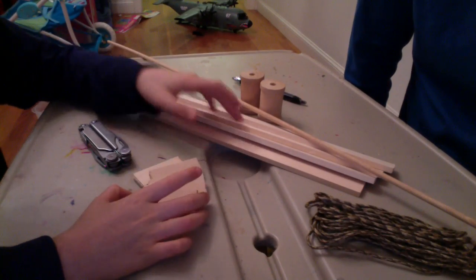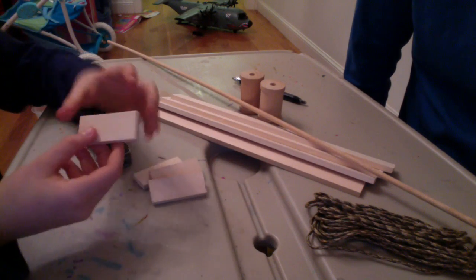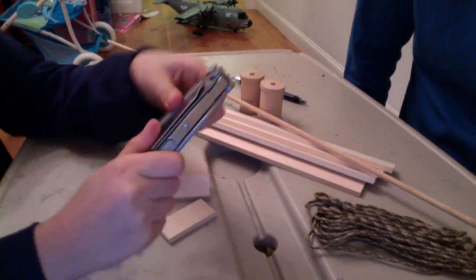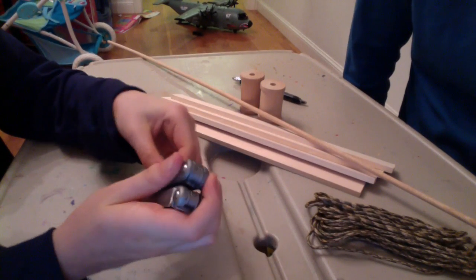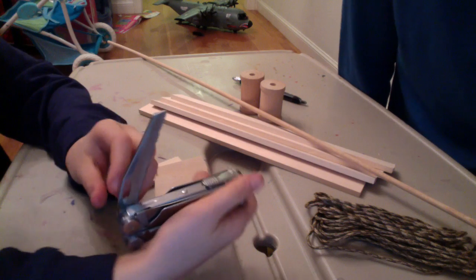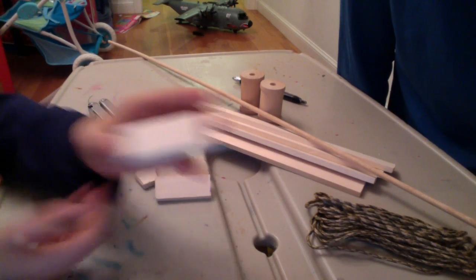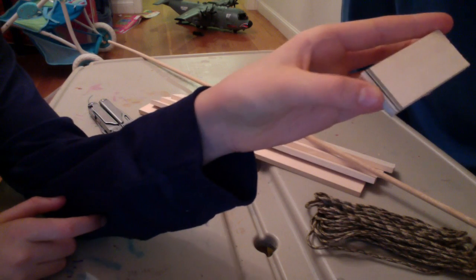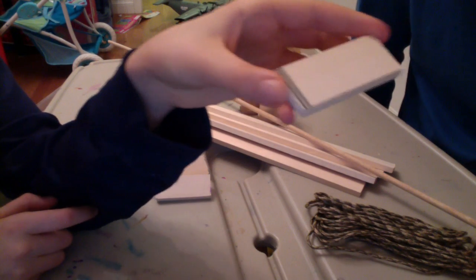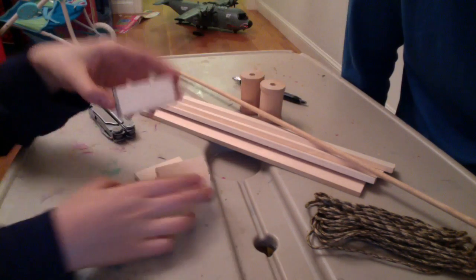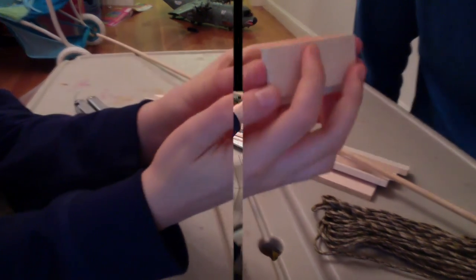Here these are all, this is all balsa wood, we use this like multi-tool kind of thing with like all the different saws and stuff, as you can see there. We cut those into these small little pieces, as you can see there. They're all equal, so they just look the same.